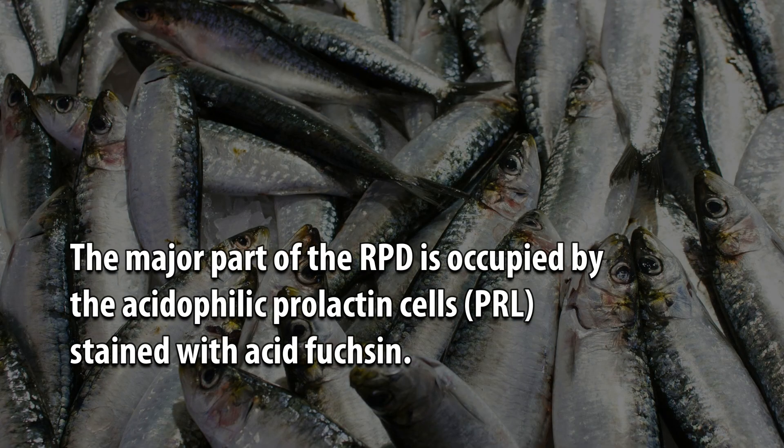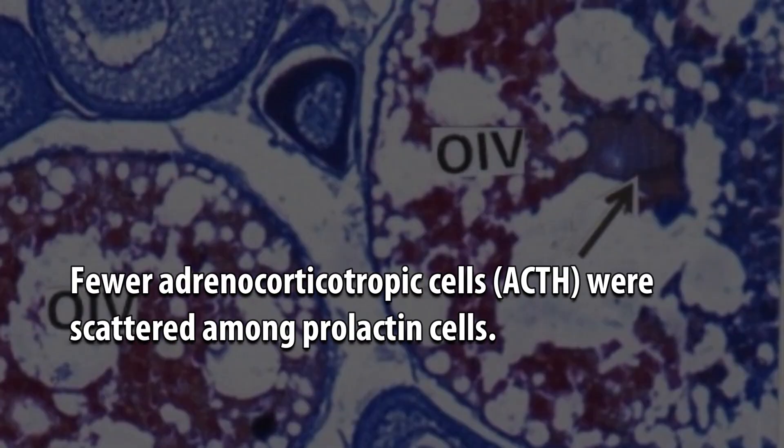The major part of the RPD is occupied by the acidophilic prolactin cells (PRL), stained with acid fuchsin. Fewer adrenocorticotropic cells (ACTH) were scattered among the prolactin cells.